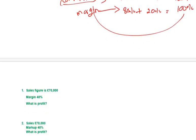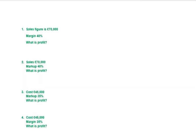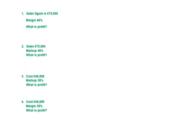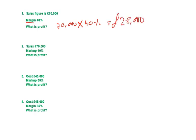We start with the very basic one. Example one: sales figure of seventy thousand and margin is forty percent — what is your profit? You simply do seventy thousand times forty percent because margin is profit applied on selling price, giving you twenty-eight thousand.